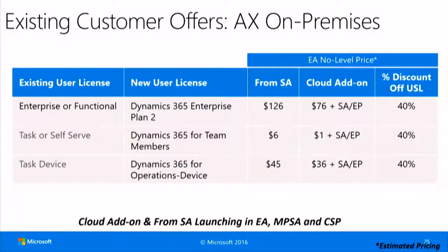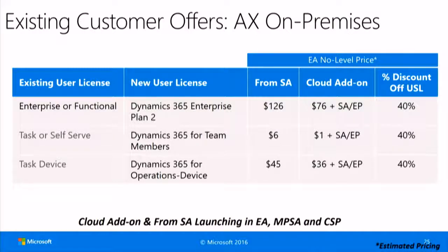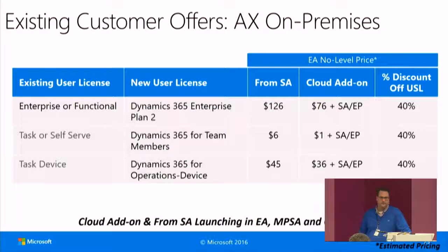To put that in numbers: for the Dynamics 365 Enterprise Plan Two, it's not $210 anymore but $126 when using the From SA SKU. Or if they choose the cloud add-on SKU, it's $67 plus their software assurance or enhancement program — adding up to 40% off. For task or self-service users coming over, they come up to $6. And with tiered pricing, with a little luck it ends up at $2 for team members if the deal is large enough.